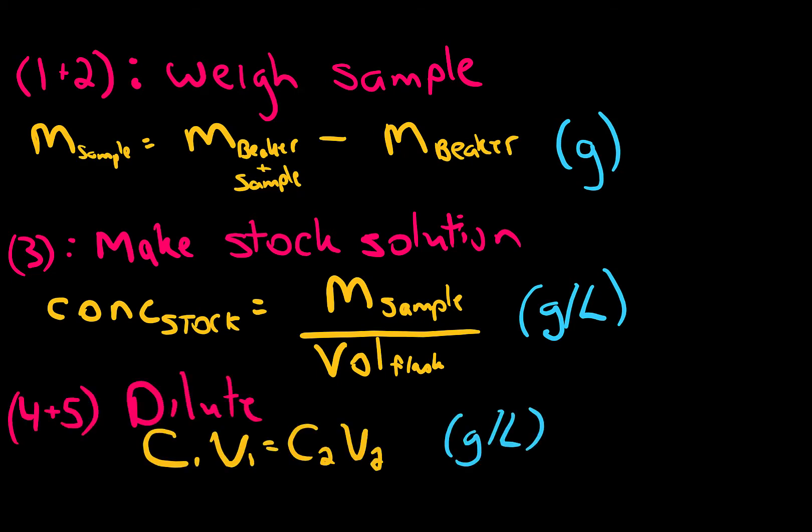When you're using a pipette to deliver a small volume of our initial stock into a final volume, you're using this equation here. C1V1 equals C2V2. You'll be using that equation a lot or at least a version of that.